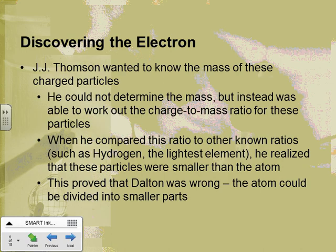Thomson was trying to figure out the mass of these charged particles, but he couldn't figure that out. He was able to figure out the charge-to-mass ratio — if you take the charge divided by the mass, he knew that ratio. He compared it to other known ratios. The charge-to-mass ratio was known for hydrogen, and what he realized was the mass of these particles was a lot smaller — the charge-to-mass ratio was actually a lot bigger.